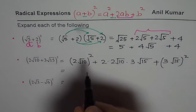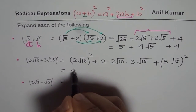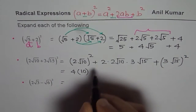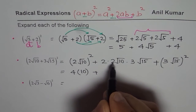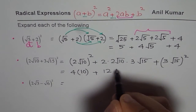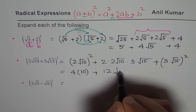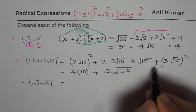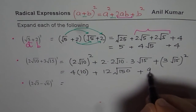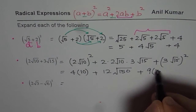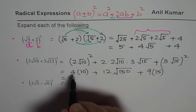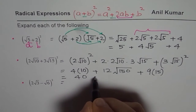Now simplifying: square of 2 is 4, and square root of 10 squared is 10, so we get 4 × 10 = 40. Then 2 × 2 = 4 and 4 × 3 = 12, and within the square root we get 10 × 15 = 150, giving 12√150. For the last term, 3² = 9 and (√15)² = 15, giving 9 × 15 = 135. So far: 40 + 12√150 + 135.